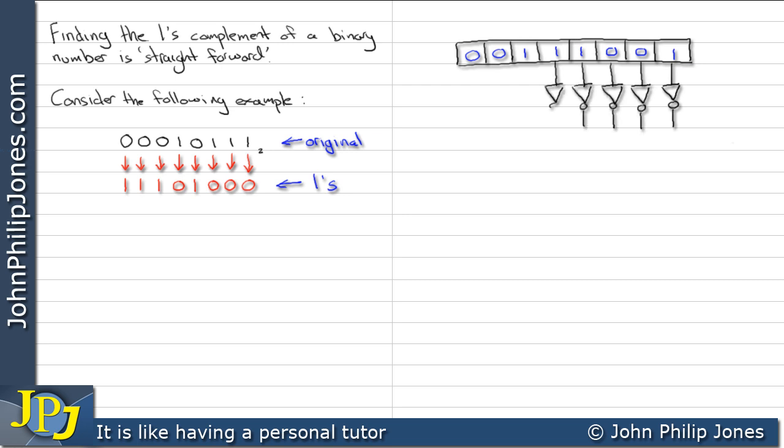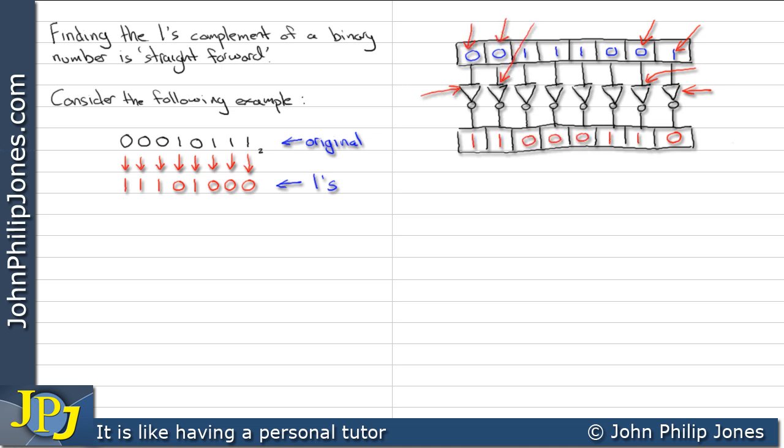And the arithmetic and logic unit can find the ones complement by simply using NOT gates. And here you can see I'm applying the register contents to the input of NOT gates, and then we're going to take the output to another register. So we can see the zeros become ones, and the ones become zeros.